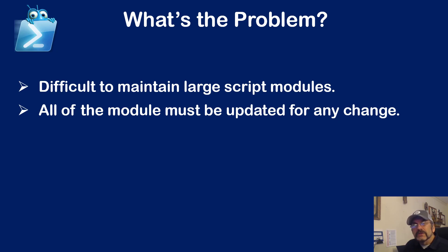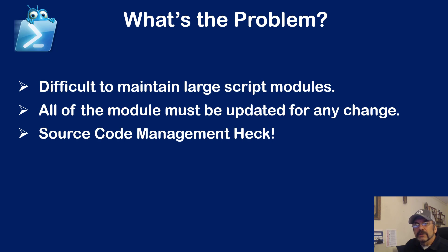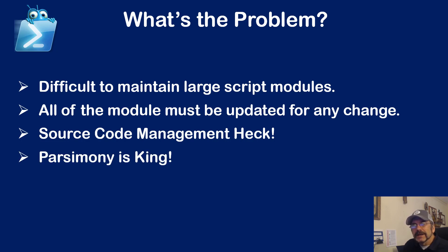Consider that maybe somebody may change that file that you don't know about. Since you're only worried about one little function, you're probably not going to test all the other functions that could be affected by somebody else's changes. So the idea is we want to isolate when we're deploying and making changes. By default, we don't get any isolation like that. The goal here is parsimony is king — it means no more, no less than what is needed, just the right amount.